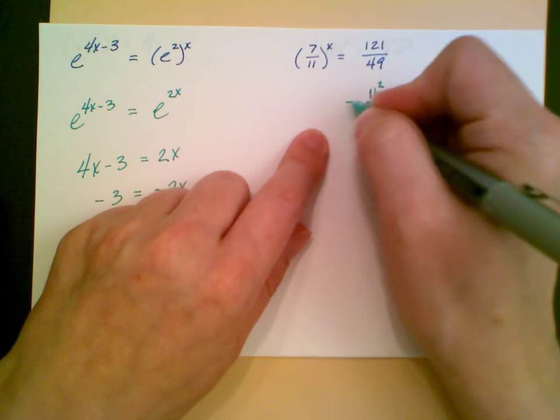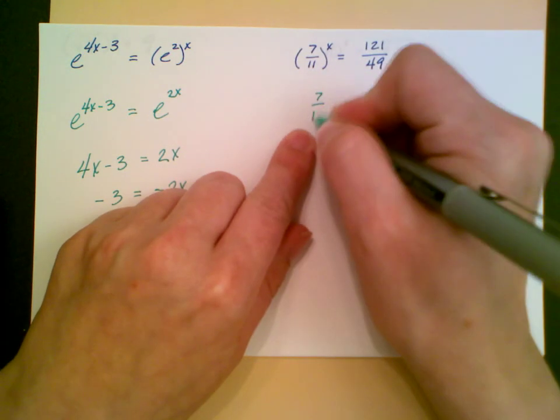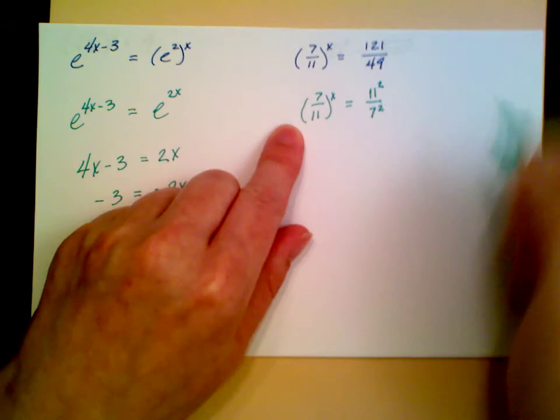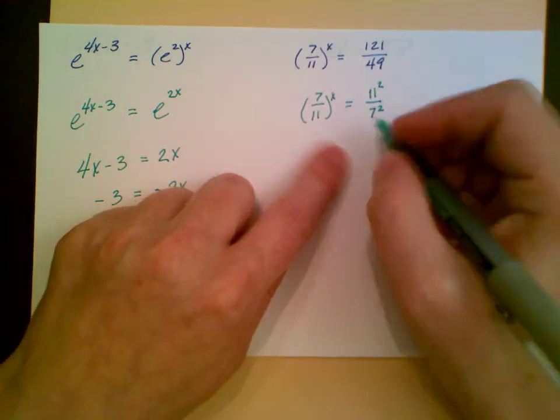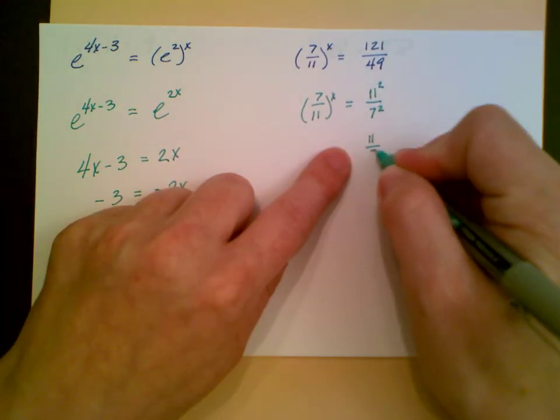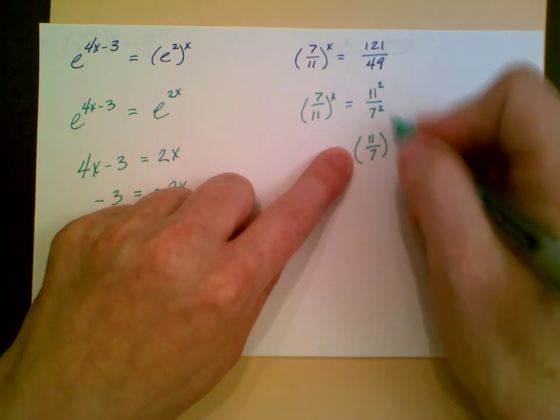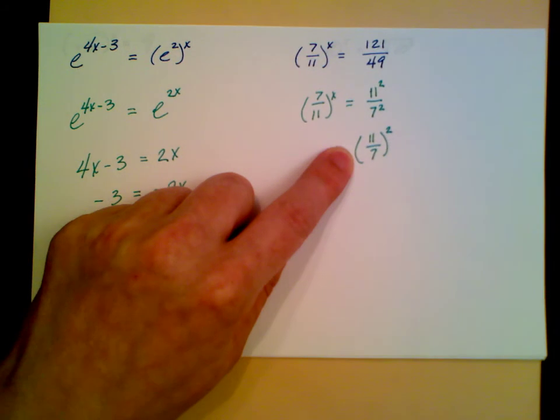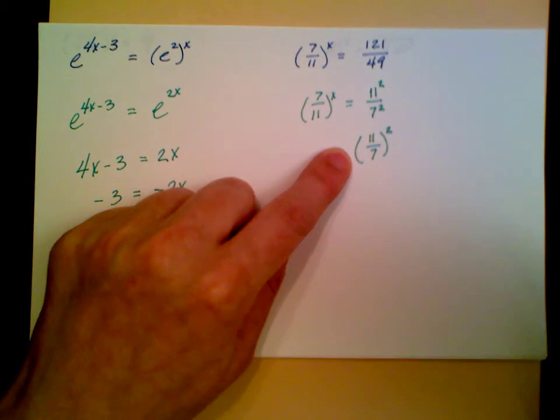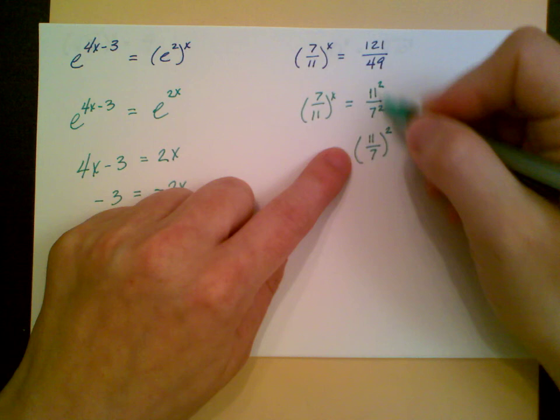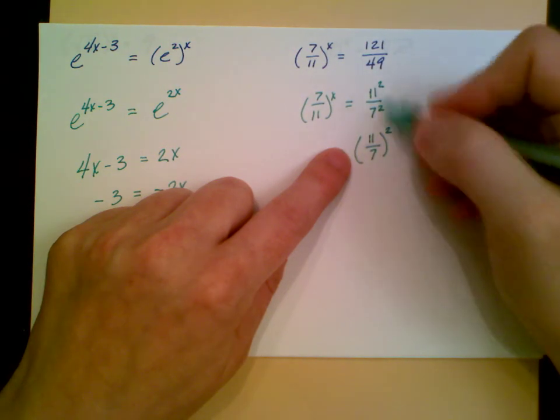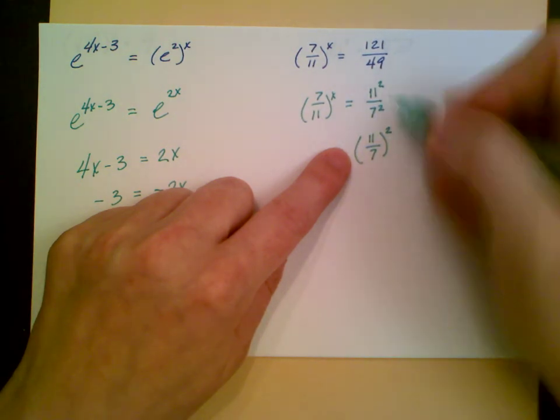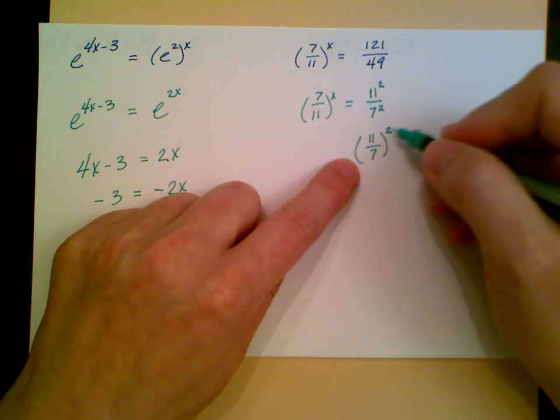I do notice that 121 is 11 squared and 49 is 7 squared. So that's definitely equal to that right-hand side. One of our exponent rules says that if I'm raising the top and bottom of a fraction to a power, that's the same as raising the entire fraction to that power.